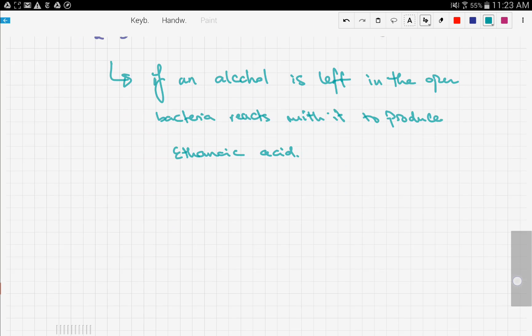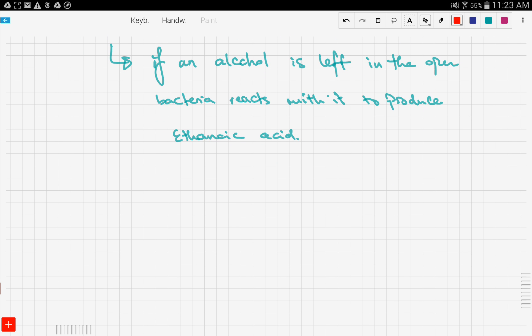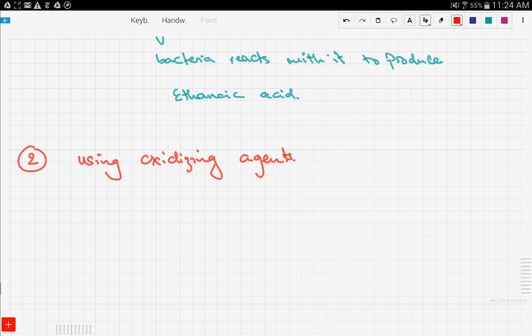Let's move on to the second method for making ethanoic acid. This method we talked about previously in two other videos: carboxylic acids and alcohols reactions. It's using oxidizing agents. What happens is we get an alcohol and add an oxidizing agent, for example potassium manganate...